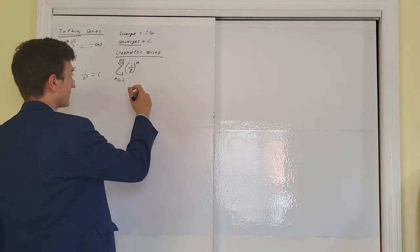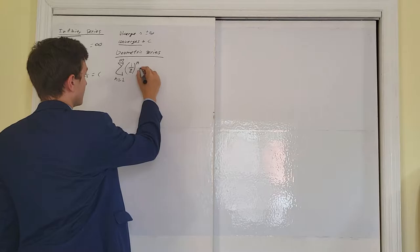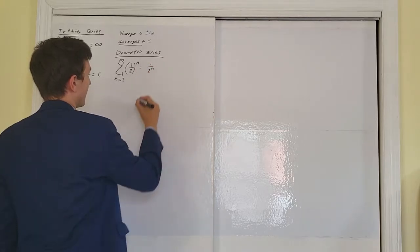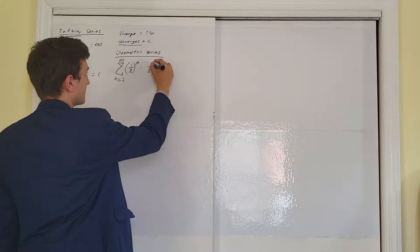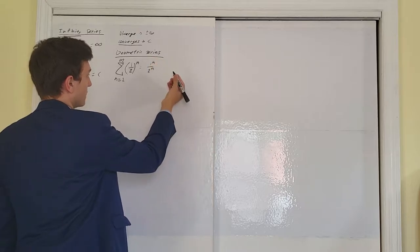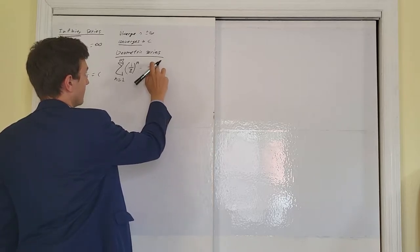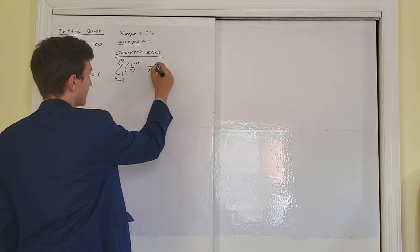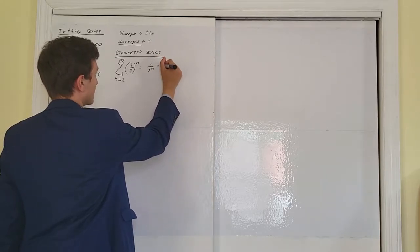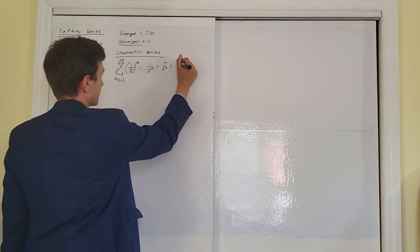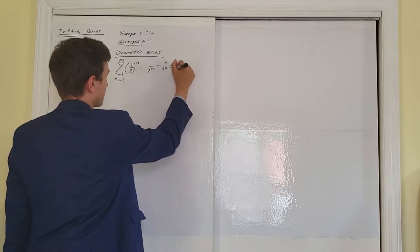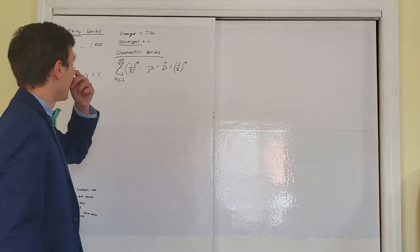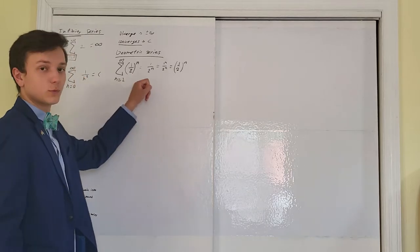They might try to trick you — they might rewrite this as 1 over 2 to the n. But keep in mind, 1 to the n is always 1. So if they write it in this form, you can convert that to 1 to the n over 2 to the n, which is the same as (1/2) to the n. So make sure you know how to identify it when you see it.